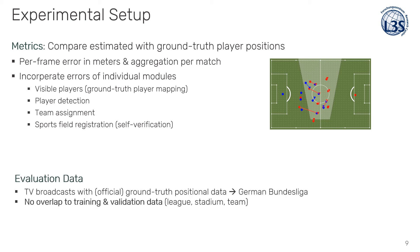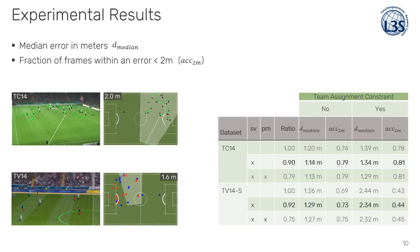The evaluation data contains TV broadcasts with synchronized official ground truth positional data from the first German Bundesliga. Most importantly, there is no overlap with the training and validation data from individual modules, meaning that other stadiums and teams will be tested. Detailed evaluation of the error and meta metrics reveals weaknesses in individual modules, but with acceptable results overall, as shown in the result table for two test sets.